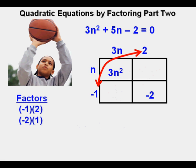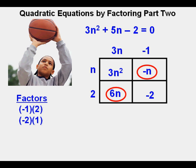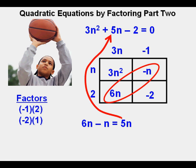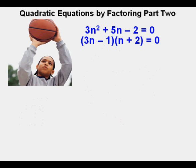His next step is to switch the positions of the negative 1 and 2 on the top and side. He multiplies them out and gets 6n in the lower left box and negative n in the upper right box. He combines like terms and sees that 6n minus n does equal 5n. So he knows the factors are correct — but remember the danger from the factoring Part 1 lesson?